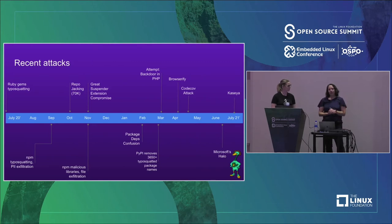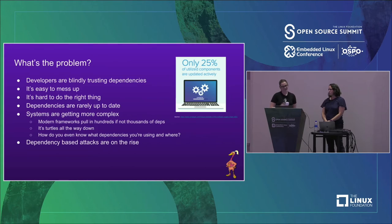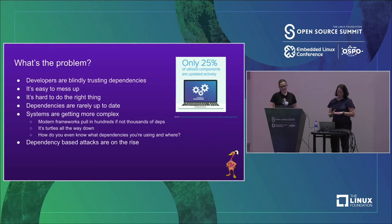So this is the problem we're looking at. It makes so much sense to leverage dependencies, but it's really easy to mess up. It's hard to do the right thing, and we don't even really have a lot of guidance about what the right thing is to do. Of all the dependencies we're using, only about 25% are even being updated regularly and pulling in bug fixes. And as software gets more complex, you might find yourself pulling in hundreds or even thousands of dependencies to your project, and we are actually seeing more and more attacks that take advantage of this.